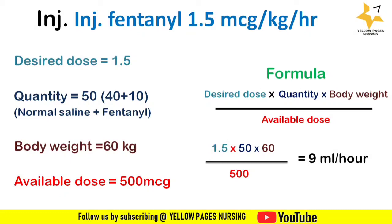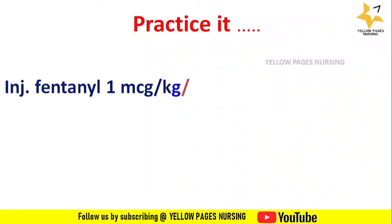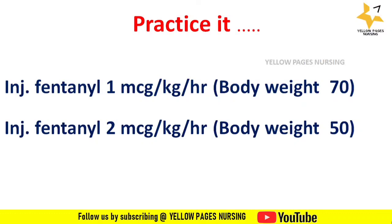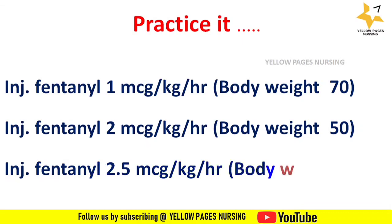Here are practice examples for you: injection fentanyl 1 microgram per kg per hour with body weight 70 kg; injection fentanyl 2 micrograms per kg per hour with body weight 50 kg; injection fentanyl 2.5 micrograms per kg per hour with body weight 40 kg. Please mention your answers in the comment box. Note: if body weight is given in lbs, convert it to kilograms before doing the calculation.